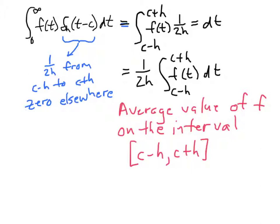And let's take a look at what happens when we do this for some specific function and a few particular values of h. So what I want to look at is, let's suppose that f of t is t squared. And we're going to do an integral. So we want to look at the integral from 0 to infinity of t squared times delta sub h of t minus 2.